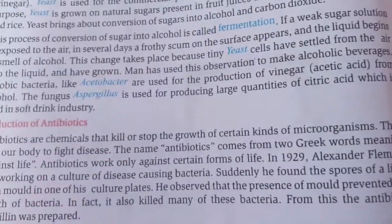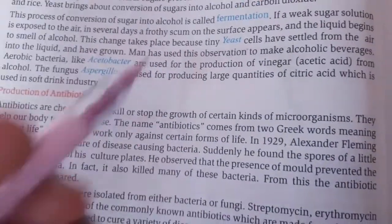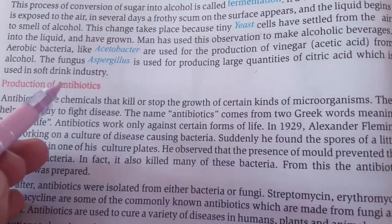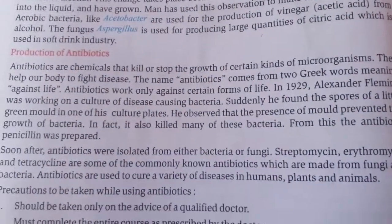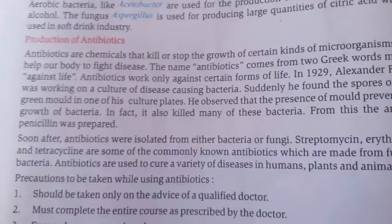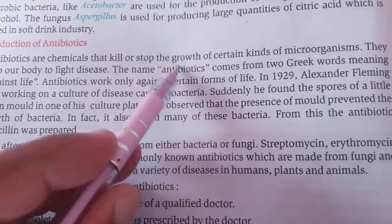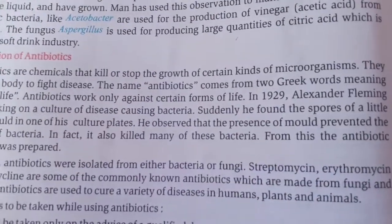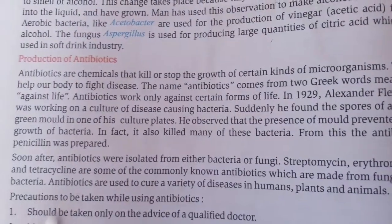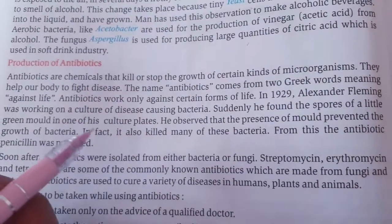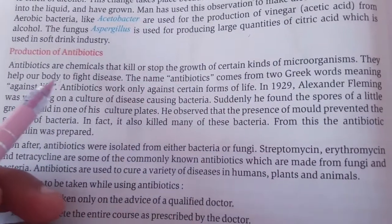Alcohol is converted to acetic acid by bacteria. The fungus Aspergillus is used for the production of large quantities of citric acid, which is used in soft drinks and cold drinks. Next: production of antibiotics. Antibiotics are chemicals that kill or stop the growth of certain kinds of microorganisms. Antibiotics stop the growth of specific types of bacteria and help our body fight disease.